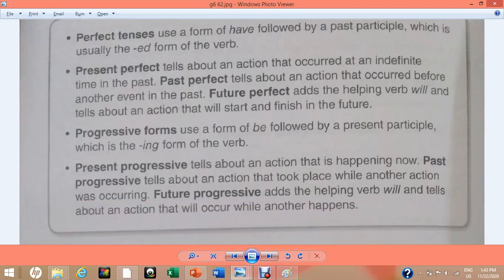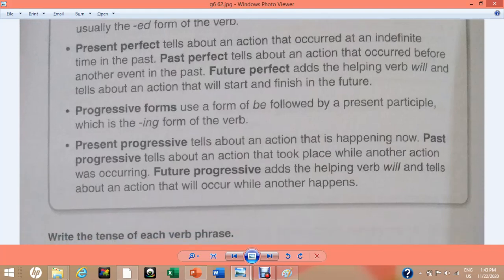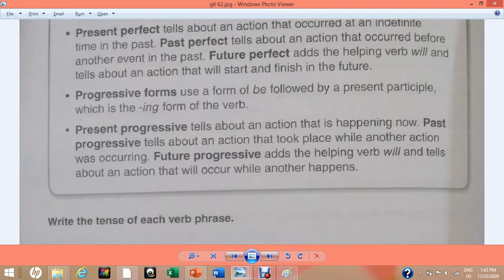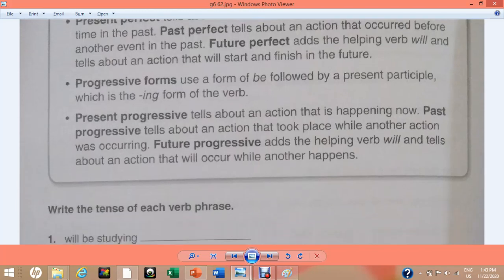Progressive forms use a form of be followed by a present participle which is the ing form of the verb. Present progressive tells about an action that is happening now. Past progressive tells about an action that took place while another action was occurring. Future progressive adds the helping verb will and tells about an action that will occur while another happens.